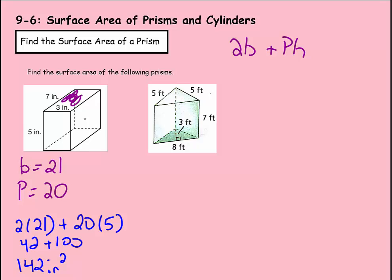For this triangular prism, we use the same formula. It has triangular bases, so let's find the area of the base. It's 8 inches long and 3 inches wide. The area of a triangle is length times width divided by 2, so 3 times 8 is 24, divided by 2 gives us a base of 12.